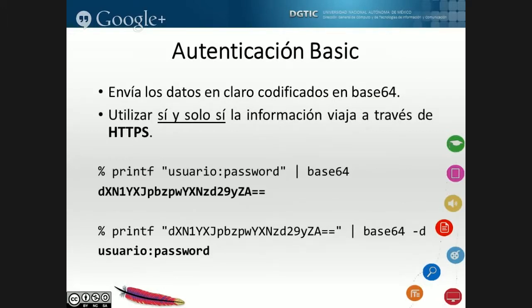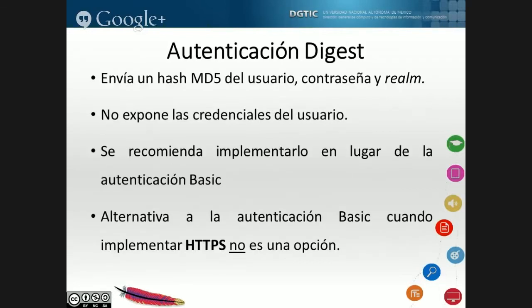Si implementamos autenticación Basic por alguna restricción en el hosting, es sabido que el password no va cifrado. Pudiera parecer que la cadena está cifrada, pero en realidad está codificada y esa codificación es reversible. Aquí se pueden ver las credenciales que se ingresan y el proceso inverso que las obtiene. Como método de mitigar estos ataques, podemos implementar autenticación Digest, que hace un hash MD5 de las credenciales y las envía sin transmitirlas en claro, ya sea que la comunicación esté en claro o cifrada con SSL. La recomendamos como alternativa si no se puede implementar HTTPS.